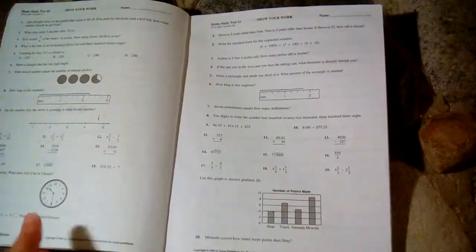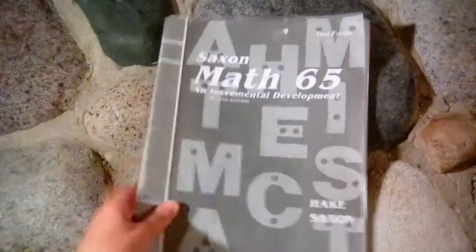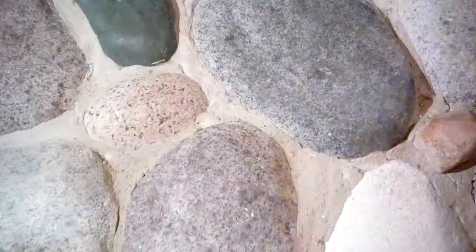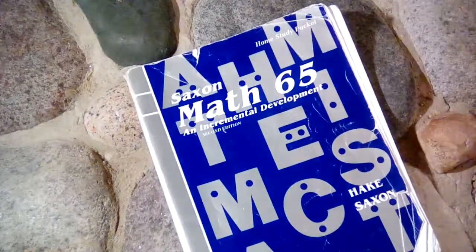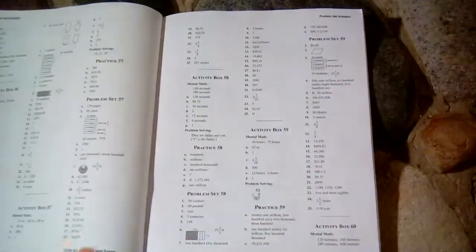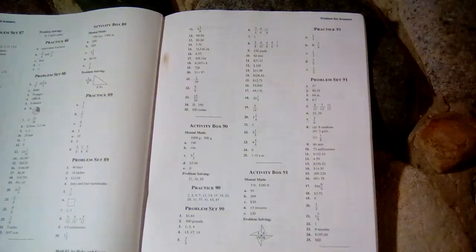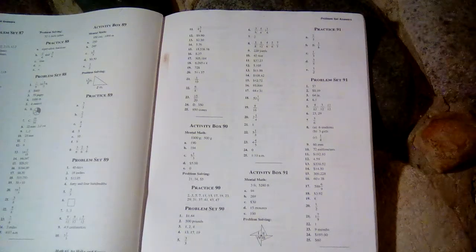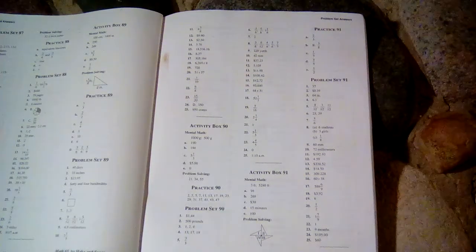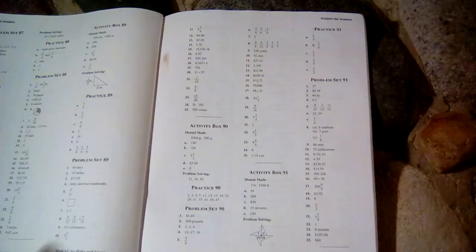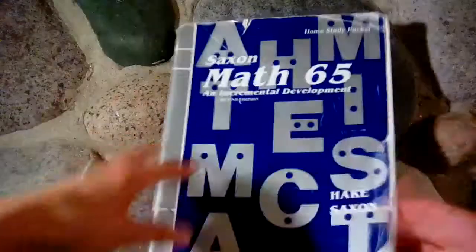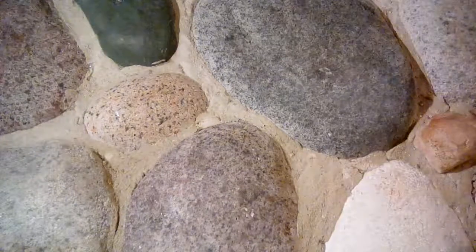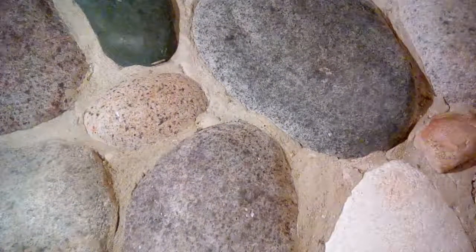There's also tests and an answer key. This is also the second edition answer key, so make sure when you are ordering your Saxon math books that you get the matching sets. If you have a first edition, make sure you get the first edition tests and answer key, and if you get the second edition, get the second edition and so forth, so that there isn't some difference in all the answers.